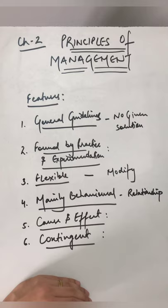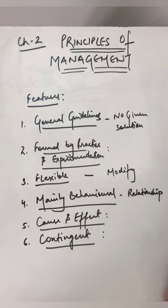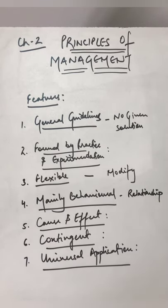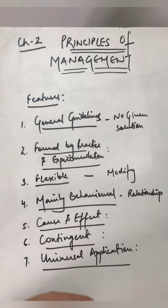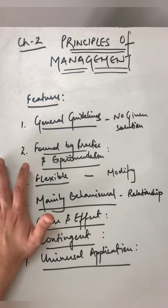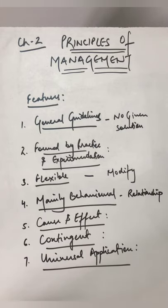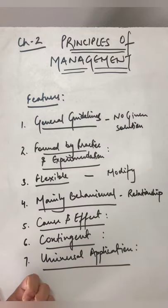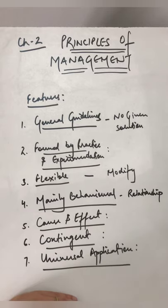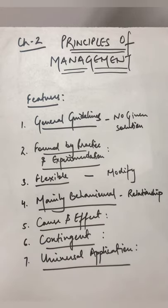The last feature of principles of management is universality. Universality means that a principle of management, formed through practice and experimentation, can be applied across all types of organizations — whether a petrol pump, school, hospital, or any other firm. These are the features of the principles of management.